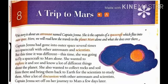Let's start the first paragraph. Captain Gina had gone into outer space several times in a spacecraft with other astronauts and scientists. But this time it was different — she was going to fly a spacecraft to Mars alone. She wanted to explore it and know a lot of different things about the planet. She also wanted to collect rocks and soil from there and bring them back to Earth for the scientists to study. After a lot of discussion, Captain Gina set off on her journey to Mars a few days later.